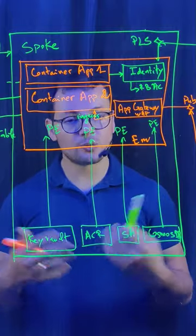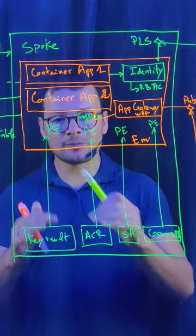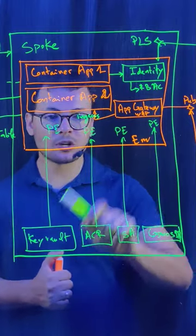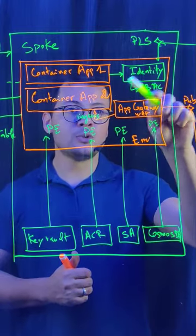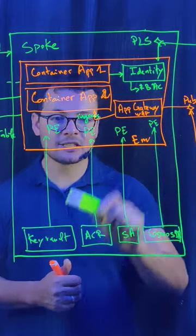You can disable the public endpoint and create a private endpoint for each service. Container apps can use a managed identity with RBAC roles to access each of these services securely.